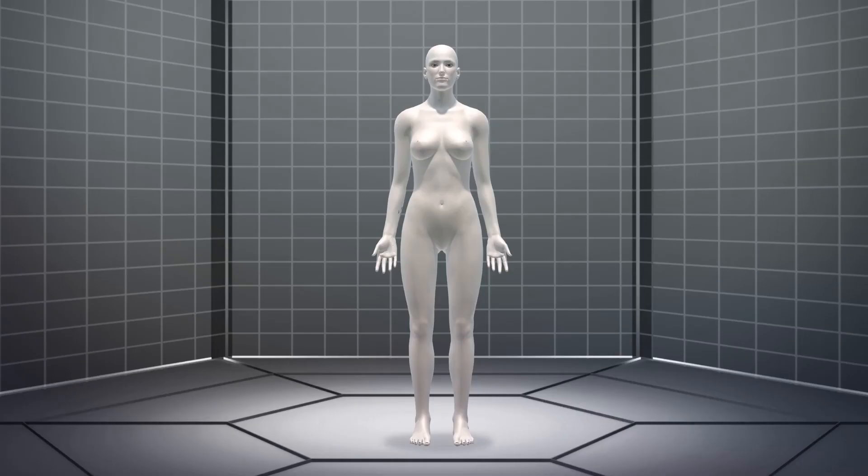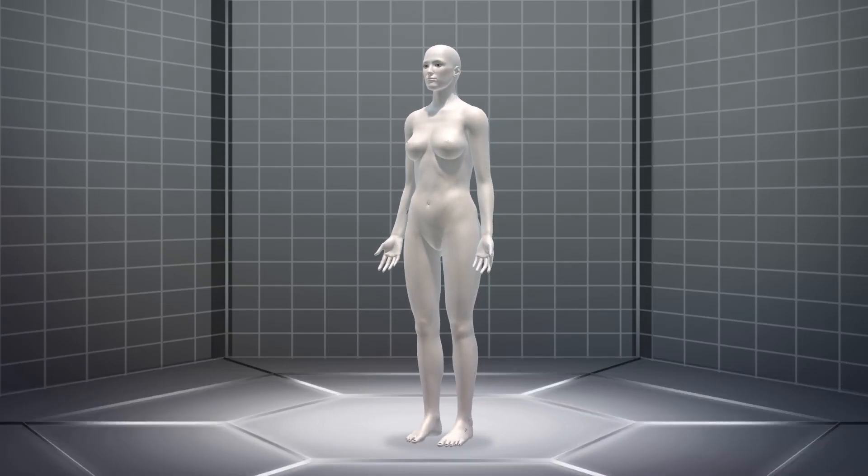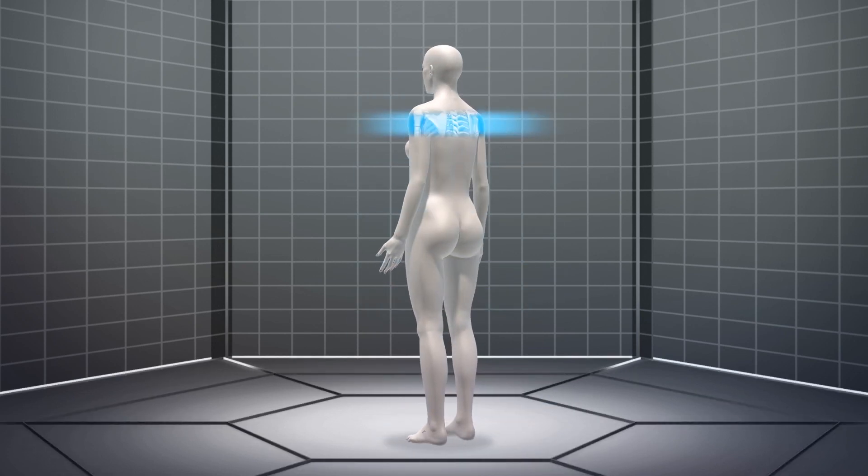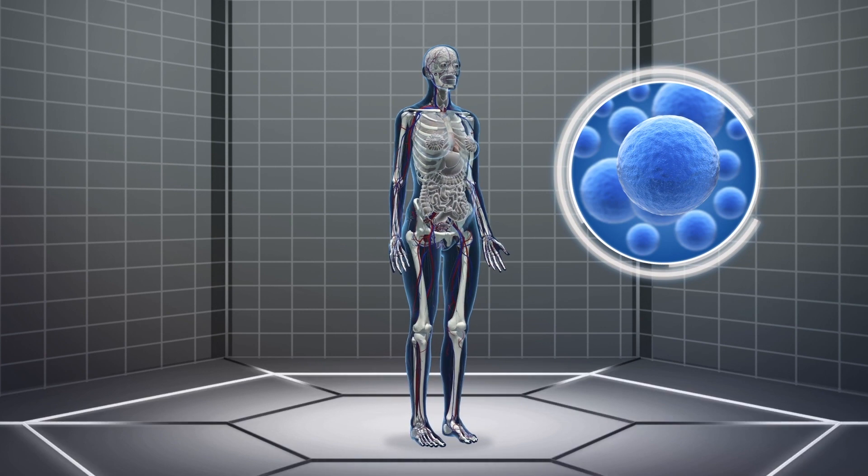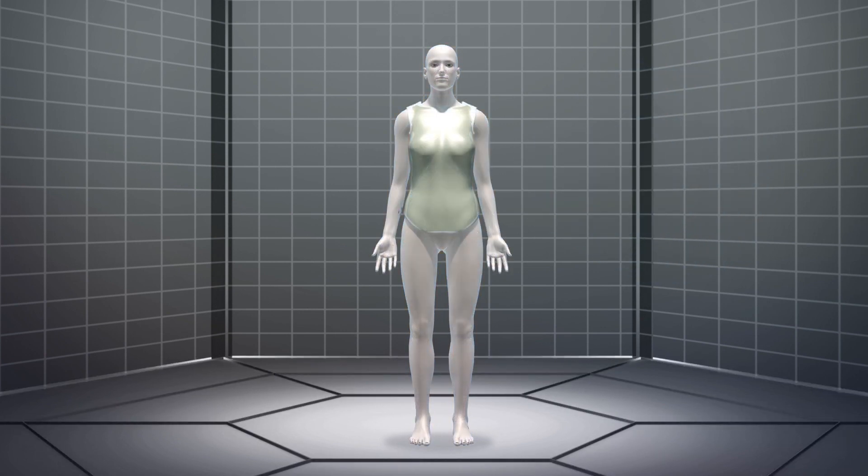Makers of the radiation vest, a company called StemRad, say the vest protects the breasts, bone marrow, stomach, ovaries, and other vulnerable organs that contain stem cells via its variable thickness shielding.